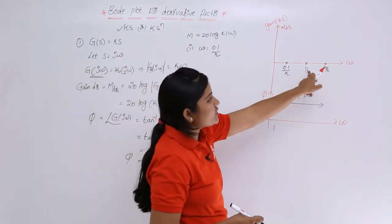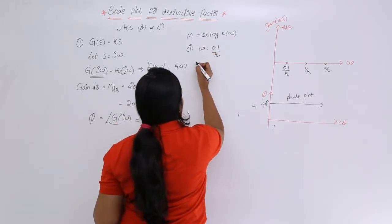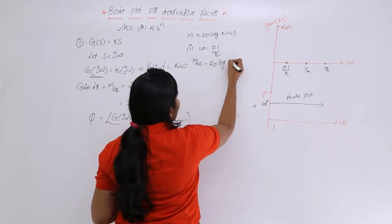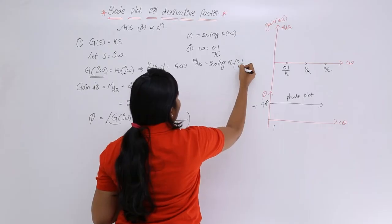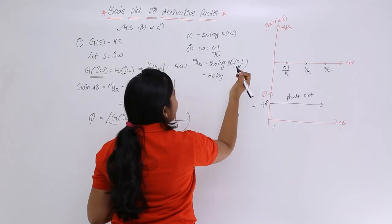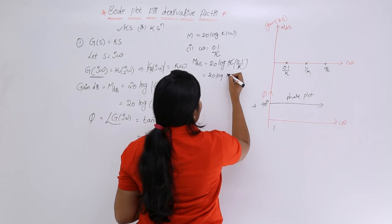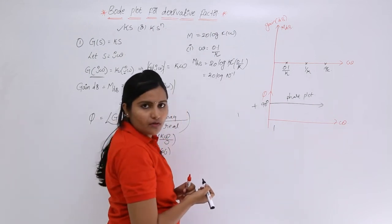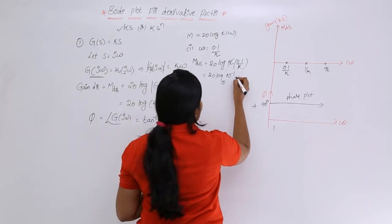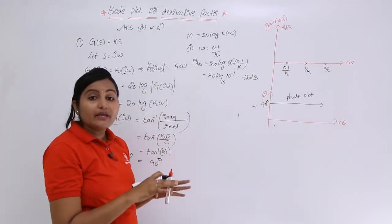At ω = 0.1/K: M = 20 log(K · 0.1/K) = 20 log(0.1) = 20 log(10⁻¹) = −20 dB. So the magnitude at ω = 0.1/K is −20 dB.